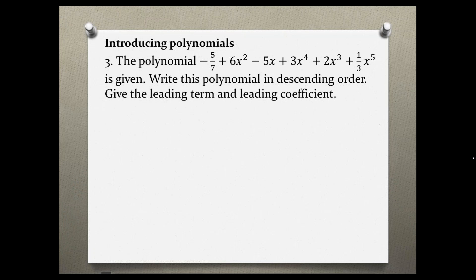Introducing polynomials, problem number 3. The polynomial negative 5 over 7 plus 6x squared minus 5x plus 3x to the fourth power plus 2x cubed plus 1 third x to the fifth is given. Write this polynomial in descending order, give the leading term and leading coefficient.